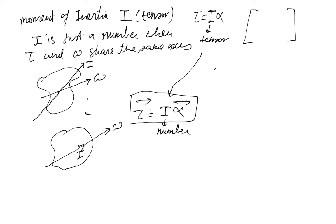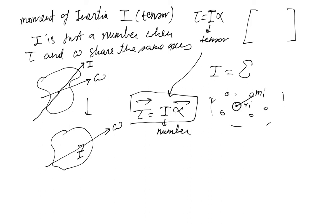So this is how we define I. For a system of discrete particles, where this is your chosen axis going into the plane and r_i is the radius from the axis for each particle of mass m_i, then I is given as the sum of m_i times r_i squared over all particles.